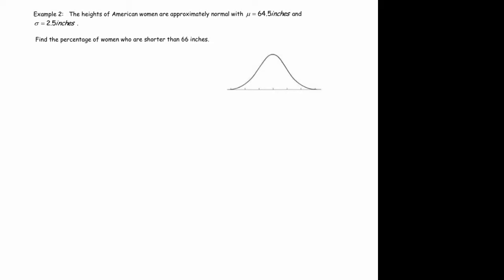The heights of American women are approximately normal with a mean of 64.5 inches and a standard deviation of 2.5 inches. And so then we're asked, find the percentage of women who are shorter than 66 inches.